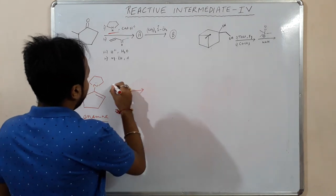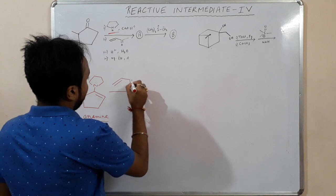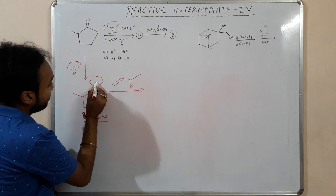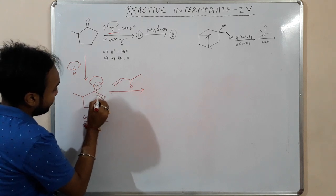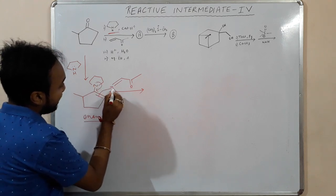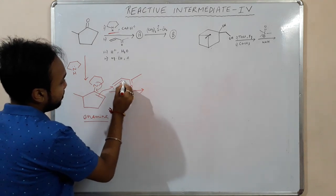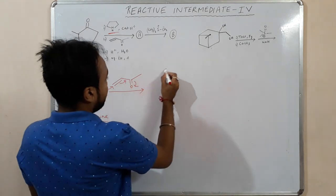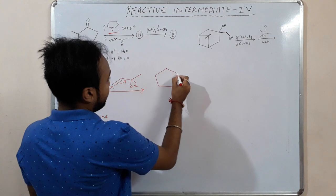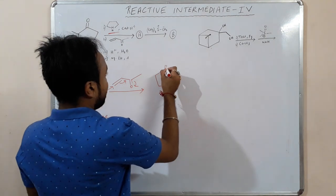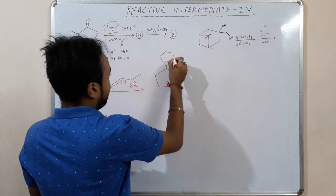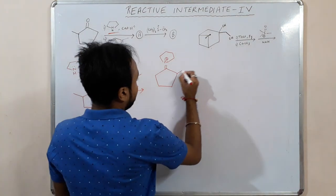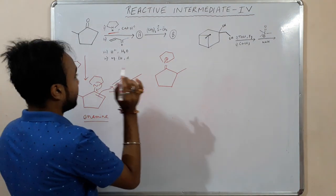We have given an alpha-beta unsaturated ketone. What will happen then? The lone pair pushes, and it will undergo 1,4-addition. So we are basically getting this iminium ion, with 1, 2, 3, 4 carbons.